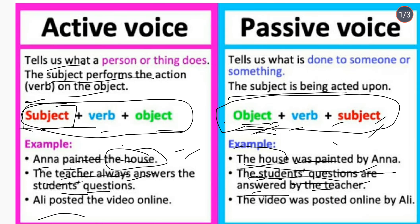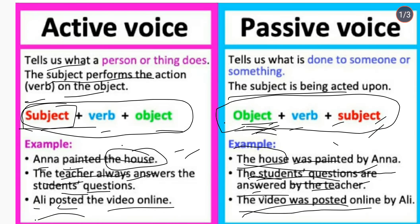Next example: 'Ali posted the video online.' In passive form it becomes: 'The video was posted online by Ali.' In active, Ali is the subject, posted is the verb, and the video online is the object. In passive, the video is the object, was posted is the verb, and by Ali is the subject.